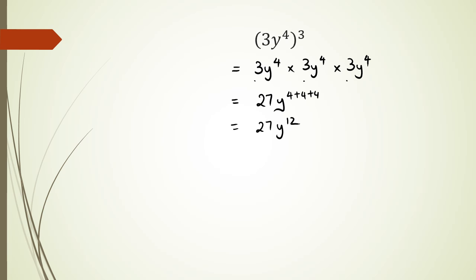What you should have noticed is that four times three is 12. The most common mistake people make here is they do the y part correctly — y to the power of 12 — but then they look at the three and just go three times three equals nine, even though they know it's three to the power of three. So let's not make that mistake: three to the power of three is three times three times three, which is 27.